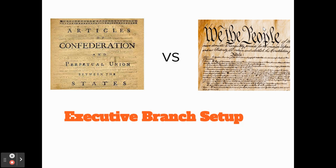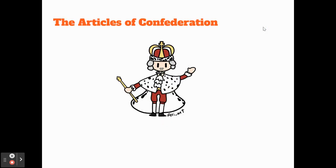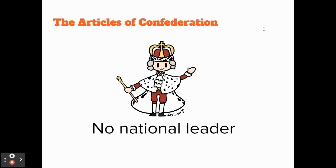When comparing the Articles of Confederation government and the Constitution that replaces it, the executive branch setup is very different between the two. In fact, under the Articles of Confederation system, there is no executive branch — there's no national leader.